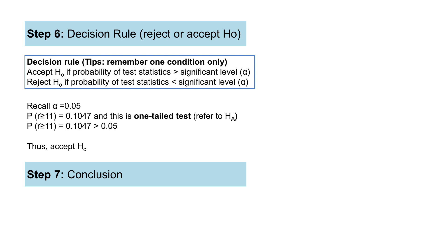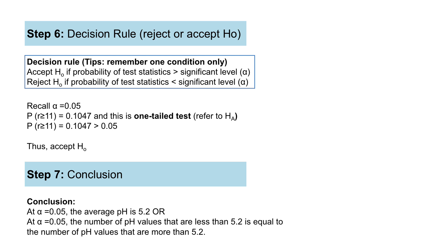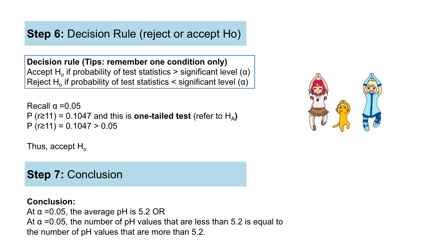The final step is to make a conclusion based on the decision in the sixth step. Since we accept the null hypothesis, the conclusion is: at alpha = 0.05, the average pH is 5.2. Or equivalently, at alpha = 0.05, the number of pH values less than 5.2 is equal to the number of pH values more than 5.2. This sums up the seven steps needed to perform a one sample sign test.